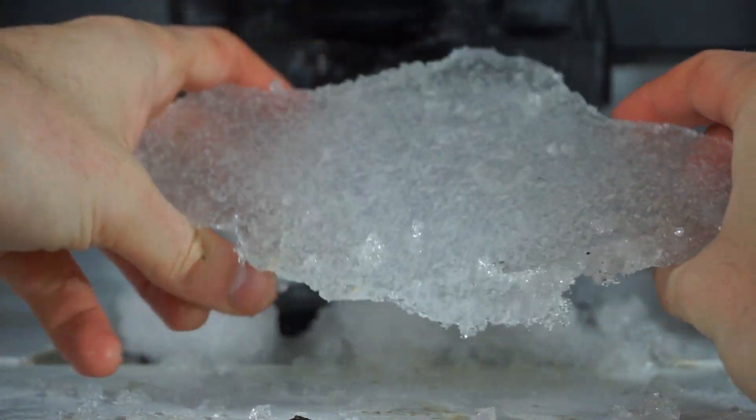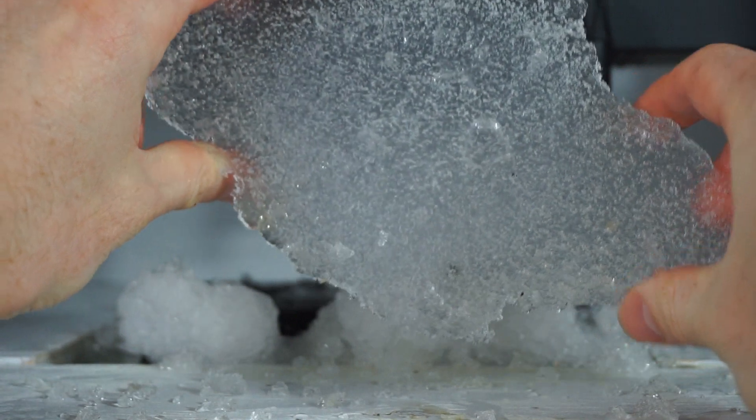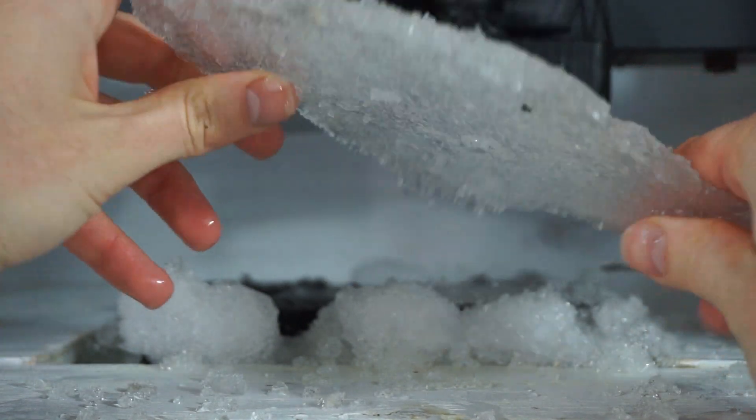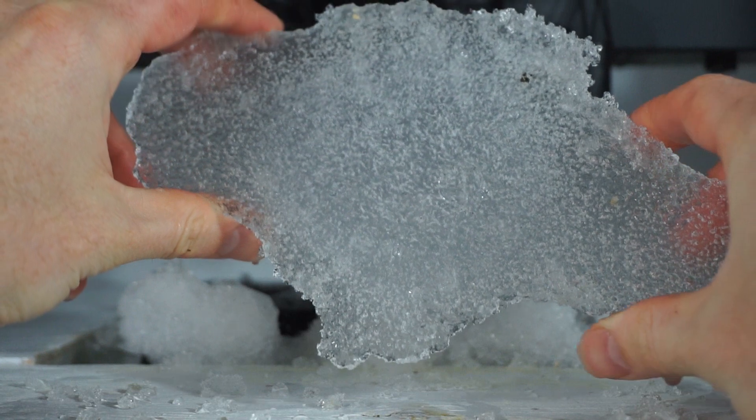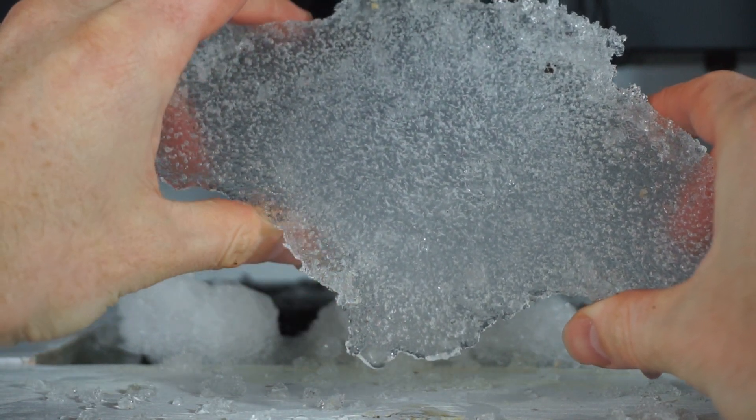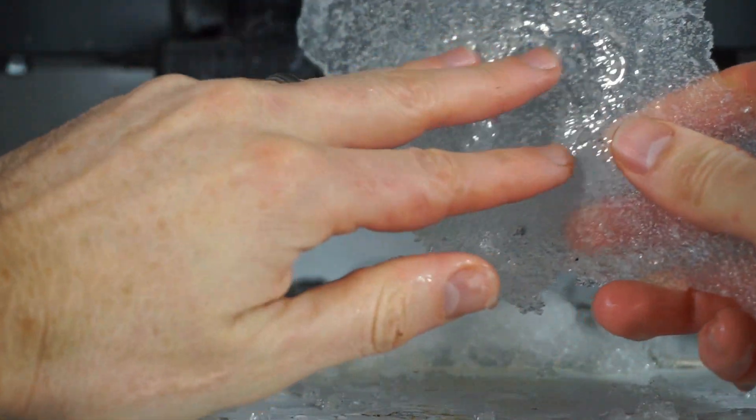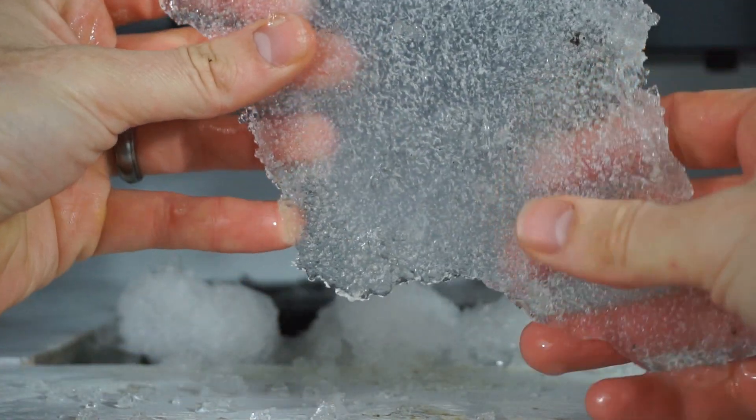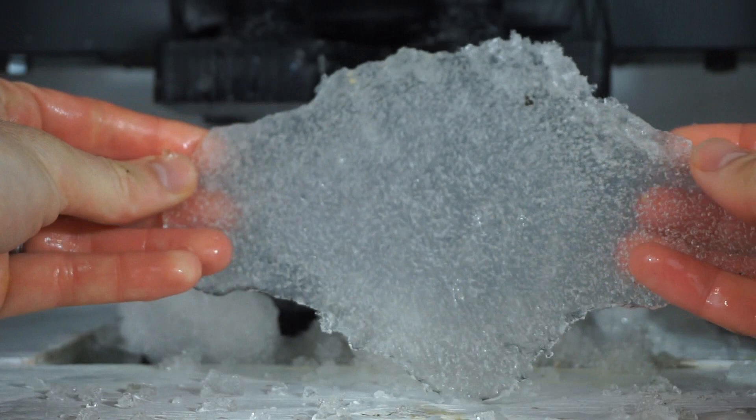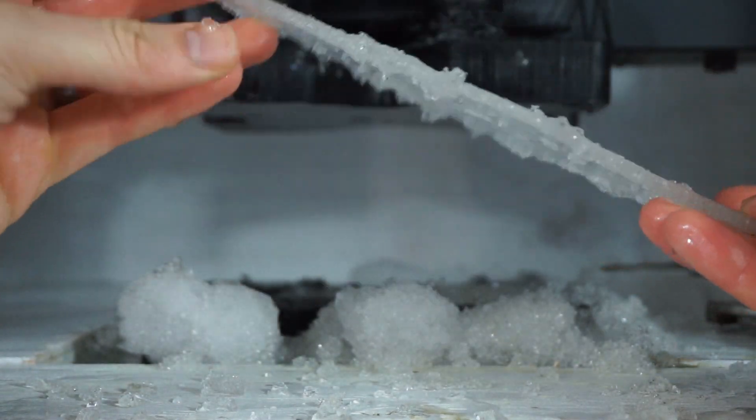So what happened there is the snow is a bunch of little pieces of solid ice. But when we put pressure on it, it turned it back into the liquid state. But when we released the pressure it was still below freezing, so it all froze again back into a solid state. So now we have a nice sheet of ice. Pretty cool.